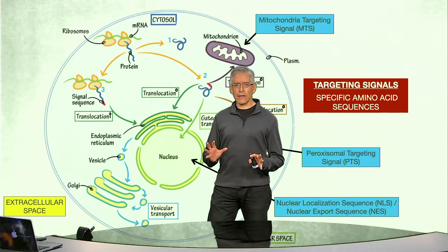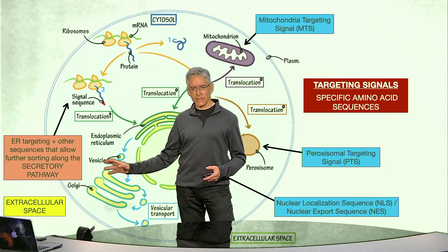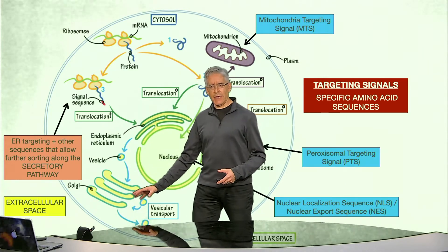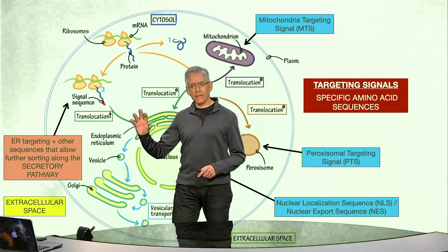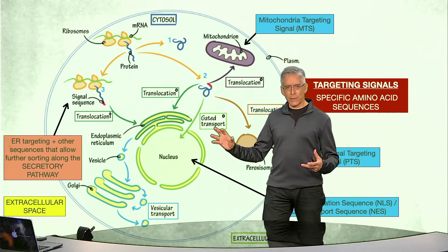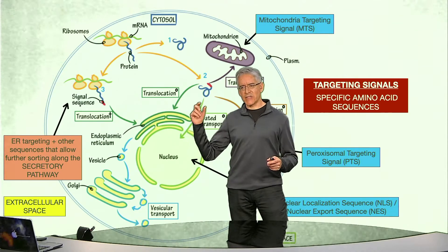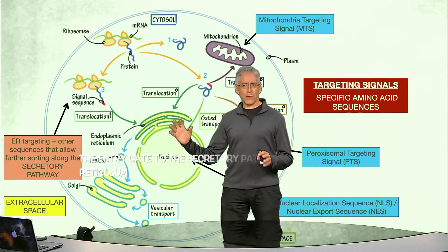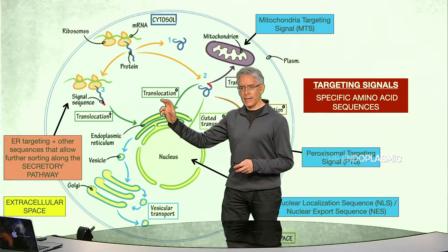Similarly, there are specific sequences that allow proteins to be targeted along what we define as the secretory pathway, which is constituted by the membranes of the endoplasmic reticulum, the Golgi apparatus, secretory vesicles, endosomes and lysosomes, as well as the plasma membrane. This pathway constitutes a separate set of potential destinations within the cell, and it has a single entry door located in the endoplasmic reticulum. All proteins targeted to any destination along this pathway must enter through the endoplasmic reticulum.